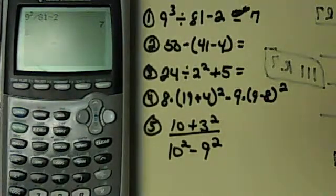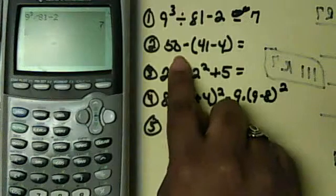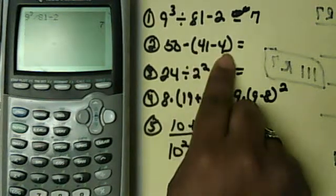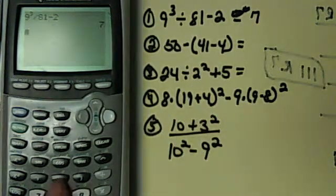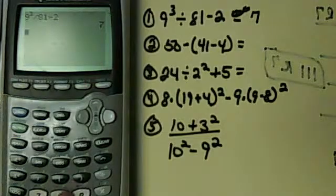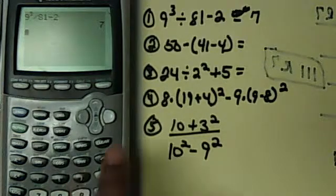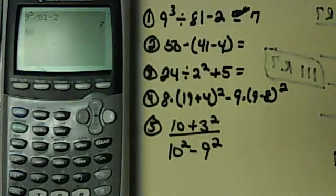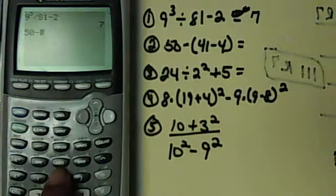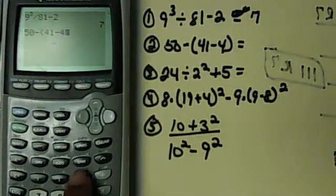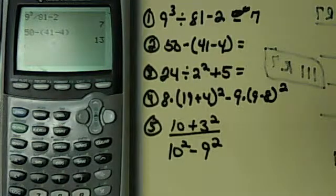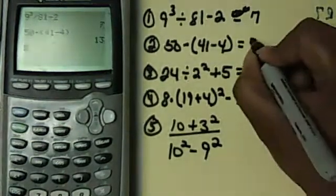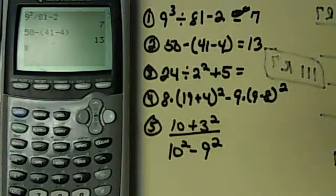We're going to do the same one for number 2. Now number 2, that's 50 minus... Now you see the parentheses here. The calculator also has parentheses right here on top of the 8 and the 9. So you don't take the parentheses out. You still put in exactly what you see. So that's 50 minus parentheses. 41 minus 4. Close your parentheses, hit enter, and you will get 13, which is the appropriate answer.